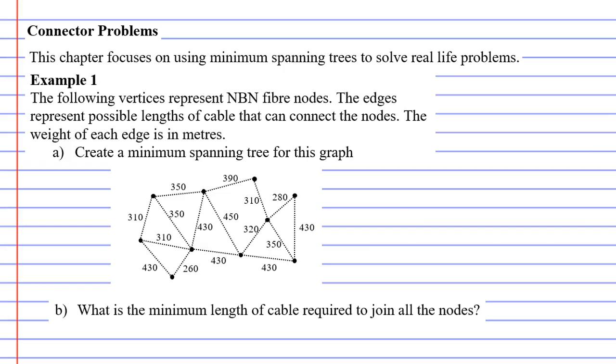If we read example 1, the vertices represent NBN fiber nodes. We can see our network diagram below with our vertices. The edges represent possible lengths of cable that can connect the nodes. The weight of each edge is in meters. We're trying to connect all the fiber nodes together using the smallest amount of cable.